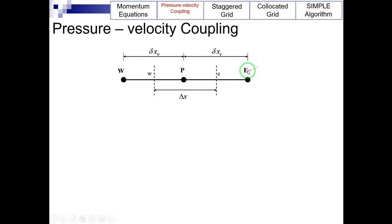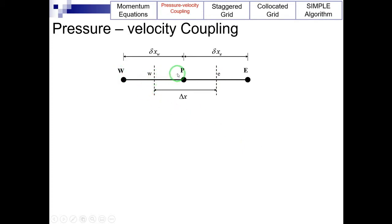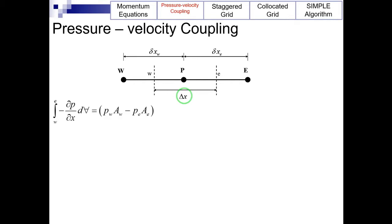First, let's discretize the momentum equation over a one-dimensional uniform grid. Here, uppercase W, P, and E indicate the centers of the western, central, and eastern control volumes respectively. The west side face of the central control volume is referred to by lowercase w, and the east side face by lowercase e. The distances between nodes W and P, and between P and E, are identified by delta_x_W and delta_x_E respectively. The distance between face w and face e is denoted by delta_x. Let's now discretize the integral form of the pressure gradient over the central control volume.